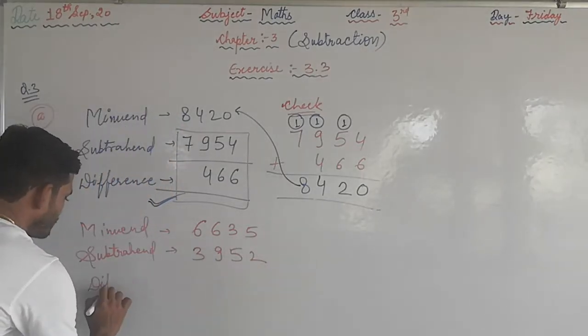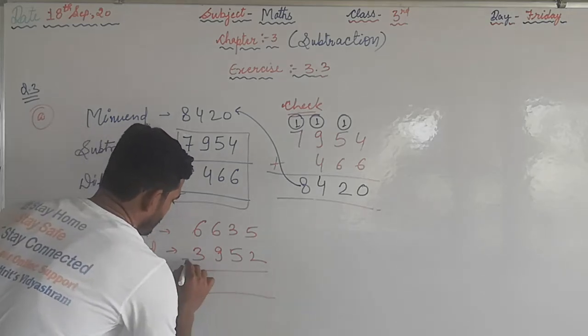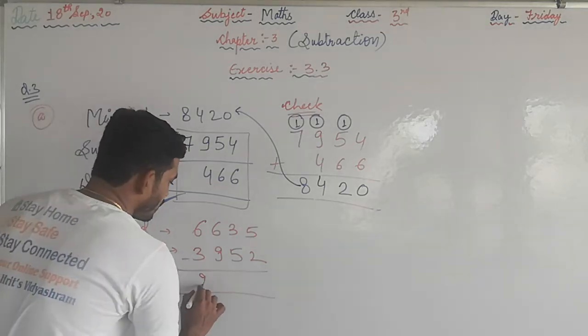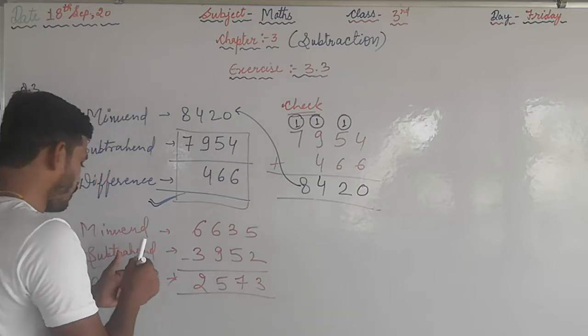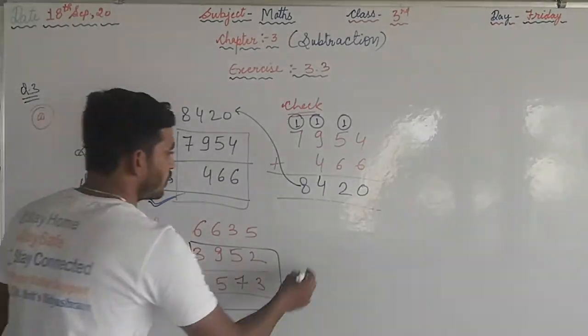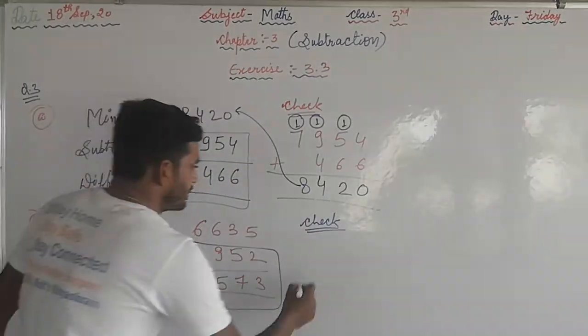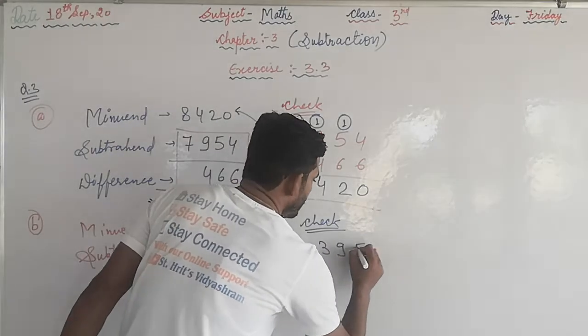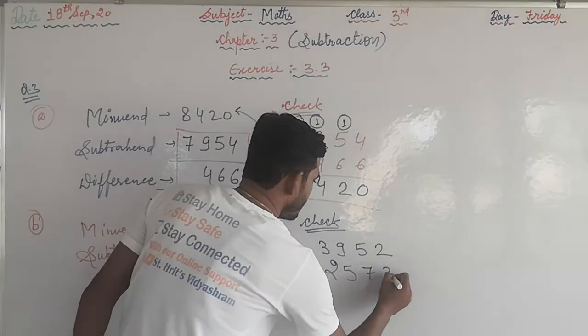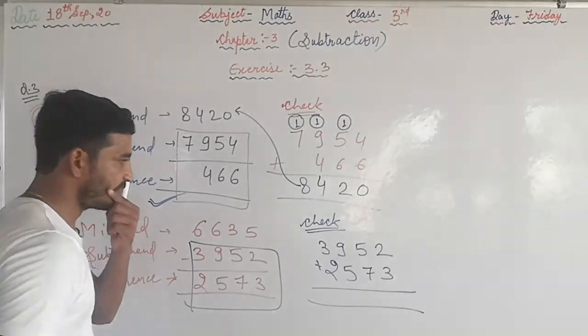What is the difference? That is 2573. So now we are going to check whether your answer is right or wrong. How do you check? You have to add the difference with the subtrahend. 3952, 2573. Add these two numbers. If you get minuend as your answer, that means the answer is right, otherwise wrong.